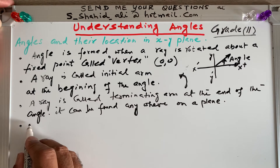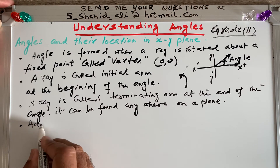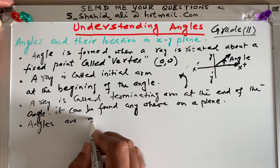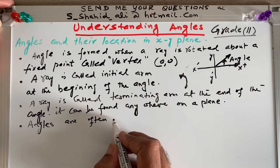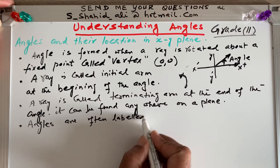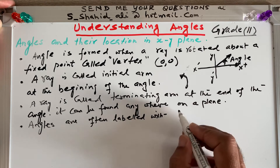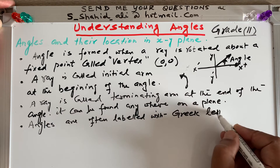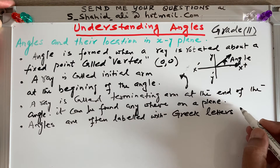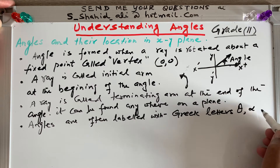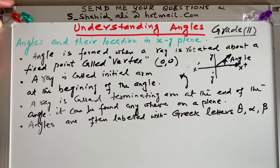Angles are often labeled with Greek letters. These are the Greek letters we always use in trigonometry: theta, alpha, beta, gamma, or whatever Greek alphabet we are using.